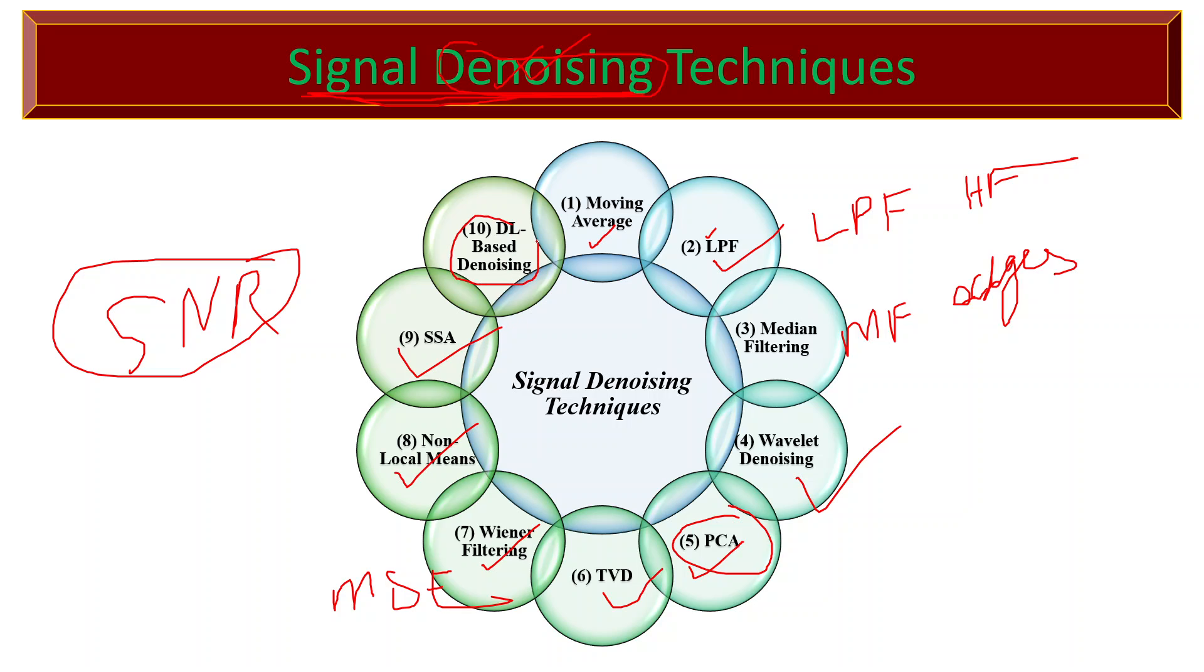Deep learning based denoising uses models trained on large datasets to learn the mapping between noisy and clean signals. The choice of denoising technique depends on the specific properties of the signal and nature of the noise. It's important to consider trade-offs between noise removal and preservation of desired signal features when selecting a method.